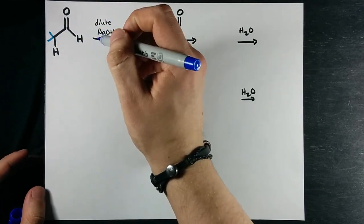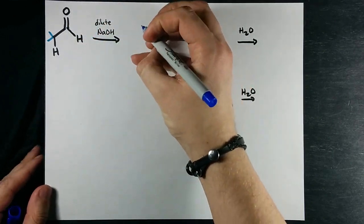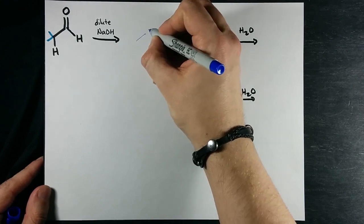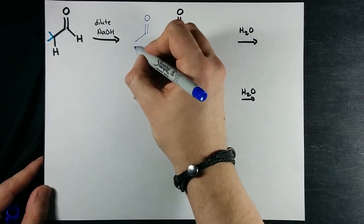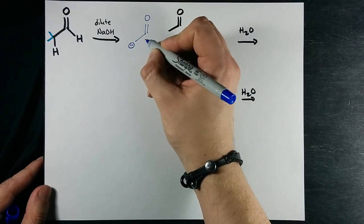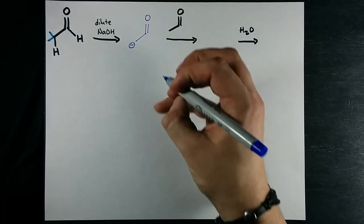When you mix the two, that H readily comes right off and it makes the conjugate base of the aldehyde, which still has the intact double bonded O, but this carbon atom has a lone pair of electrons on it.